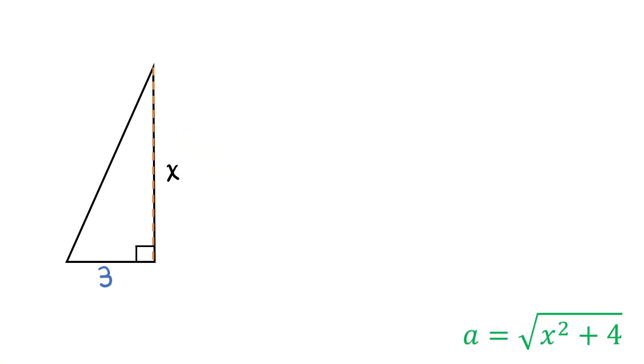Now, consider this left triangle. Let this hypotenuse be of length b. So, we get b squared equals x squared plus 3 squared or 9. So, b equals the square root of this.